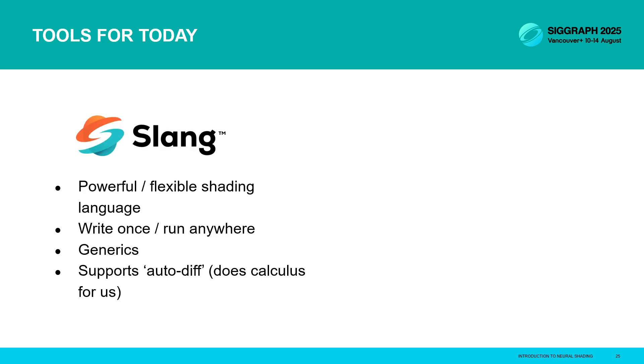Before we dive into any examples, I want to run over the tools we're going to be using for most of this course. First up is slang. This is a really powerful new shading language that's now managed by the Kronos group. It's highly cross-platform. It allows you to write shaders in one language that can be used with D3D and Vulkan and Metal. It supports a lot of really nice modern language features. One of my favorites is generics. And really important for us on this course is that it supports autodiff. So as a language, it can do calculus so we don't have to.